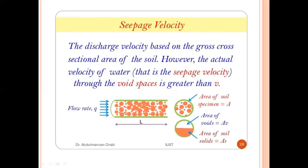Seepage velocity: The discharge velocity V is based on the gross cross-sectional area A of the soil. However, the actual velocity of water through the void spaces — called seepage velocity Vs — is greater than V. For a soil specimen with total cross-sectional area A, area of voids Av, and area of soil solids As, the relationship is: Q = A·V = Av·Vs.